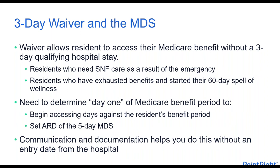The three-day waiver is in place to keep people where they are as much as possible while still allowing access to Medicare benefits without requiring three midnights in the hospital to activate the Medicare skilled benefit period. This applies to residents who need SNF care as a result of the emergency, or residents who have exhausted benefits and started their 60-day spell of wellness — though at least one day of that spell of wellness is needed after exhausting the 100-day benefit period in order to exercise the waiver.